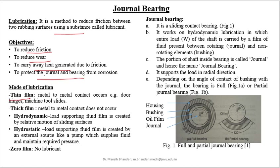There are two types of modes of lubrication: thin film and thick film lubrication. In thin film lubrication there is metal to metal contact, such as door hinges, machine tool slides, etc. In thick film lubrication, the thickness of the oil film is maintained such that metal to metal contact is completely avoided. There are two types of thick film lubrication: hydrodynamic and hydrostatic. In hydrodynamic lubrication, the load-supporting fluid film is created by relative motion of sliding surfaces, while in hydrostatic lubrication, the load-supporting fluid film is created by an external source like a pump which supplies fluid and maintains a certain pressure.